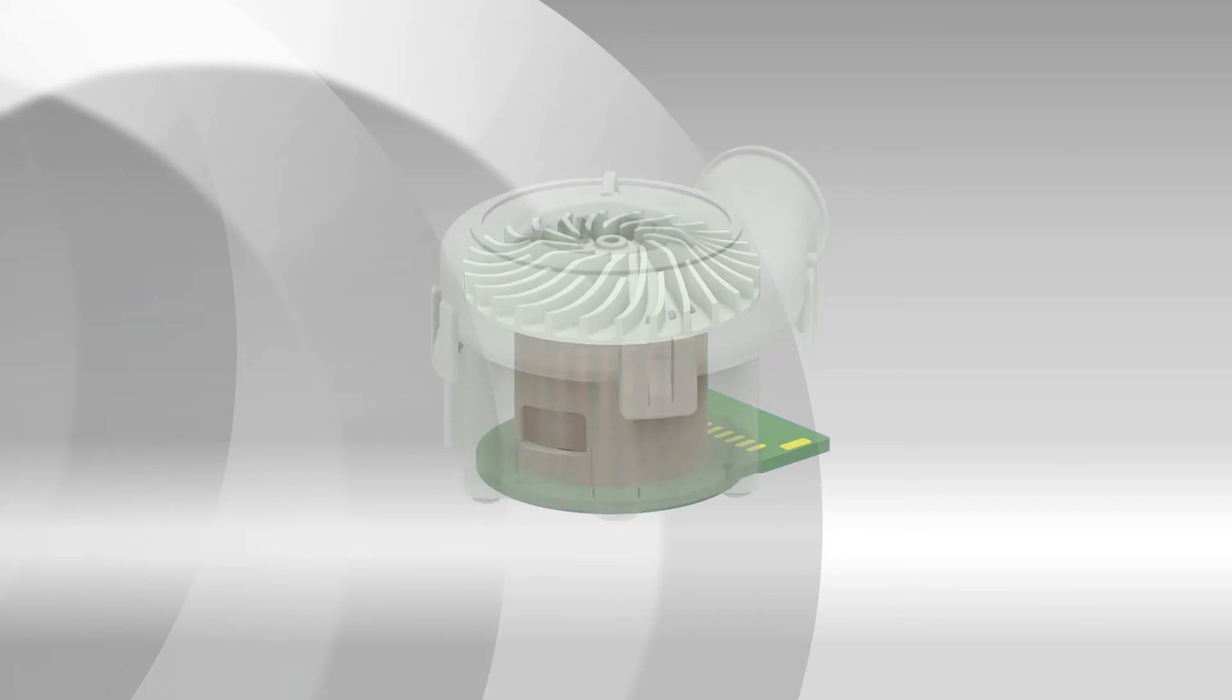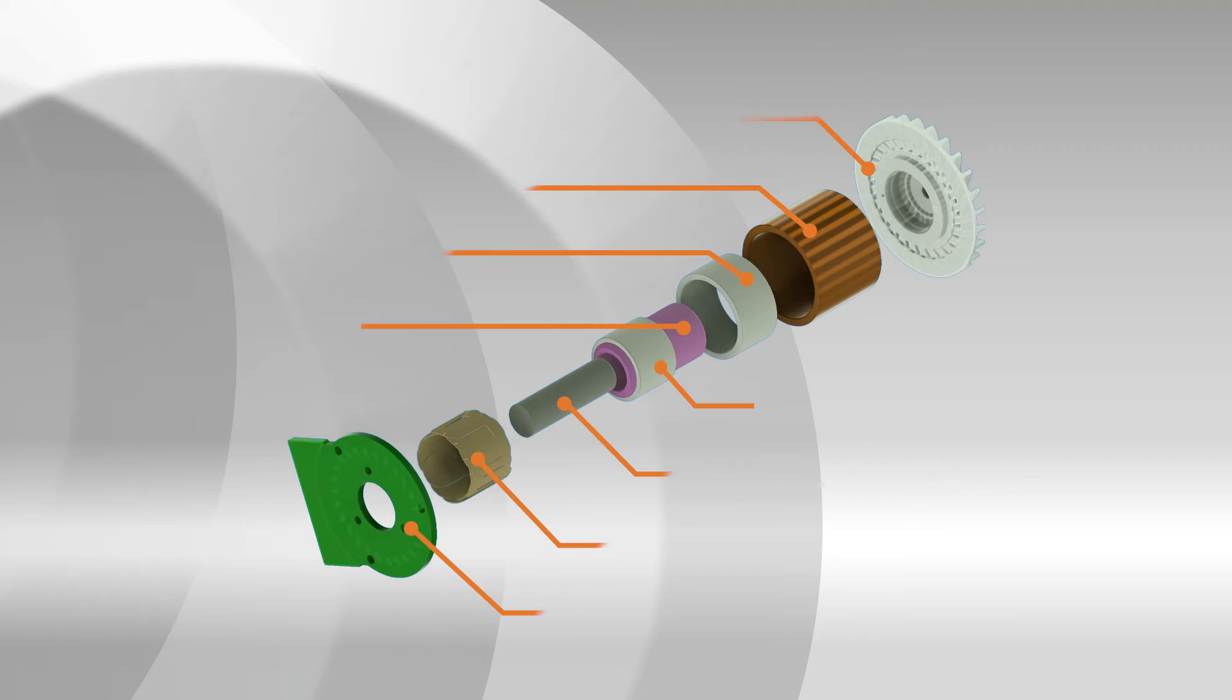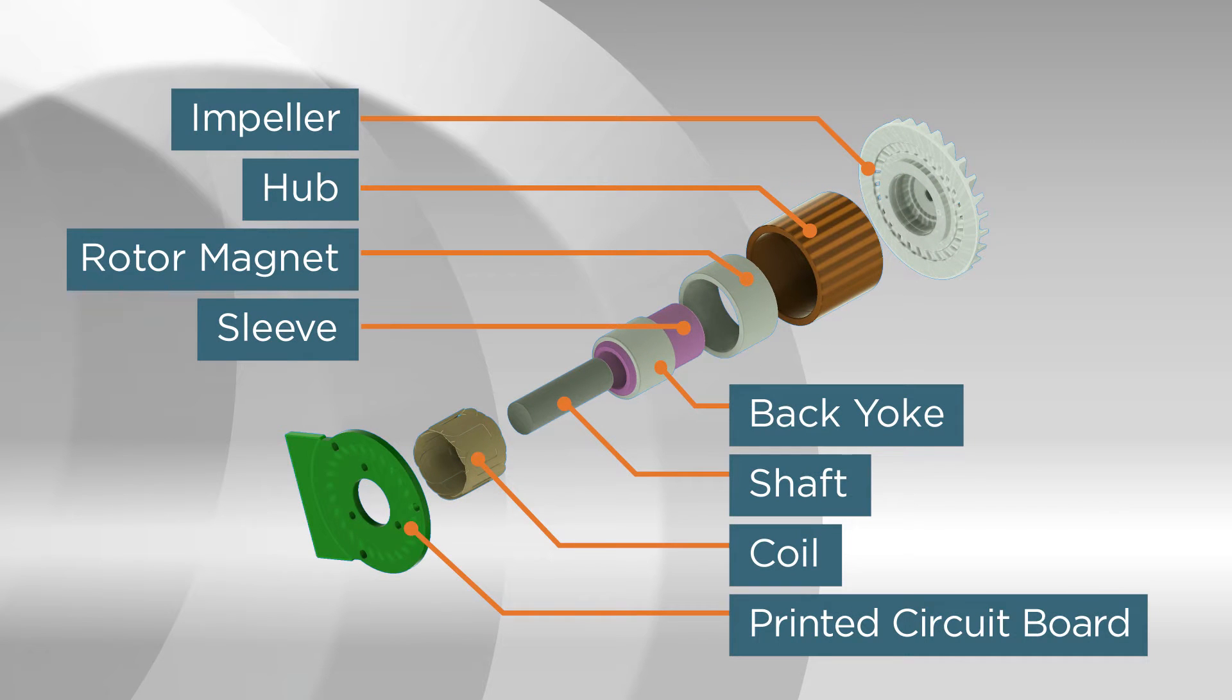Micro blowers are mainly composed of elements such as a motor with a coreless structure, a shaft, a sleeve, and a rotor blade.